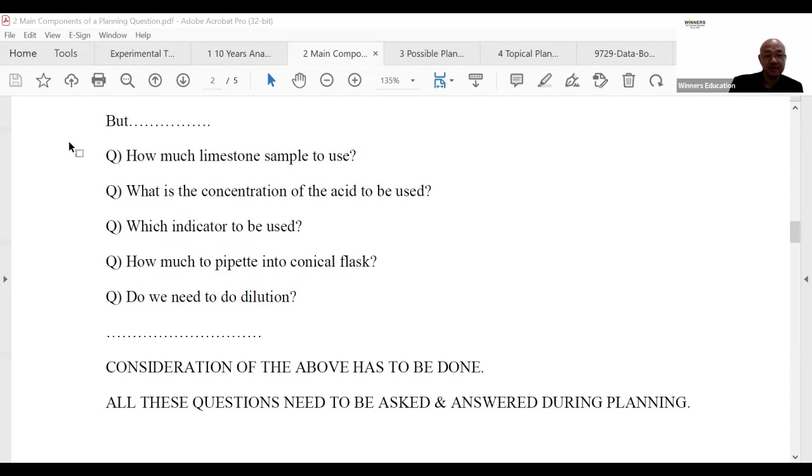First question: how much limestone you want to use? They give you 10 grams - how much do you want to use? How do you determine? And you want to use HCl to react - how much you want to use? What's the volume? What's the concentration? 1 molar, 0.1 molar, 0.3 molar? Which one do you use? And what indicator do you use?